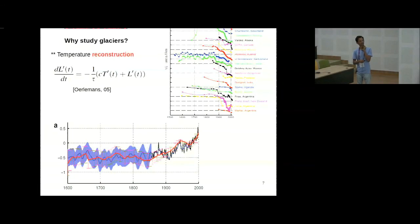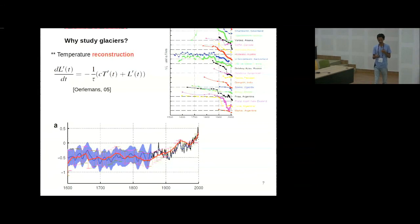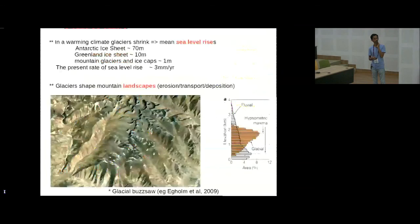Places like the Alps have glacier records going back maybe 500 years. This is Gangotri glacier, one of the most well-documented glaciers in India, but it has only a few records. In India we don't have such detailed records — that's a big problem.